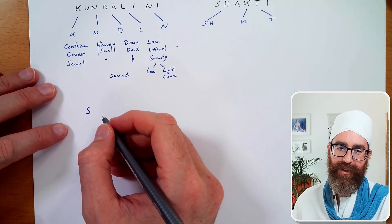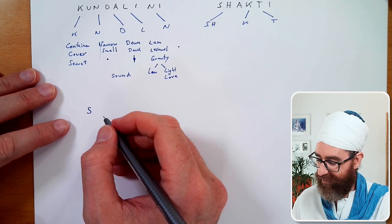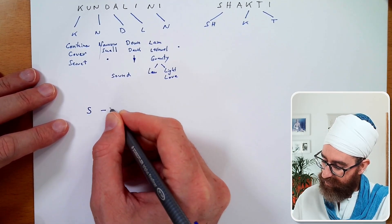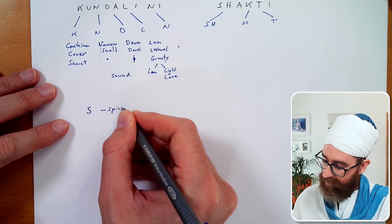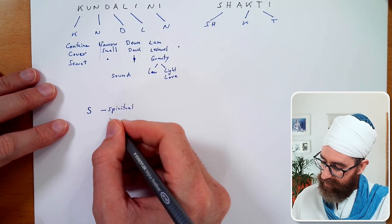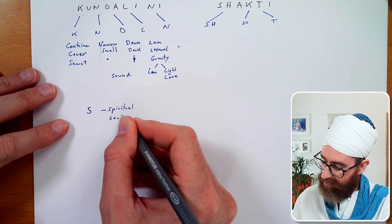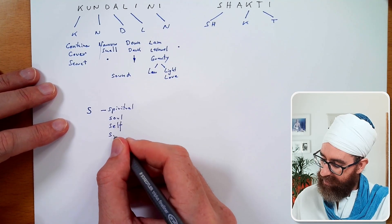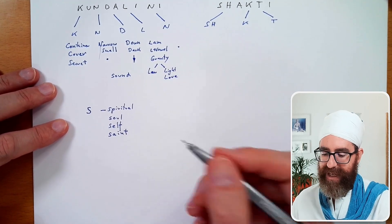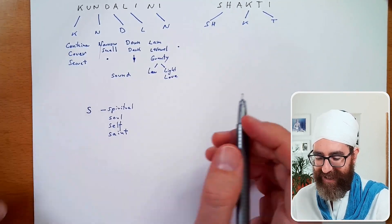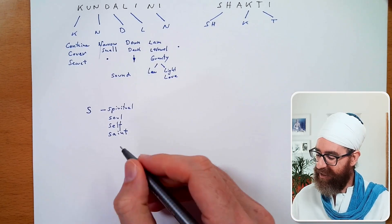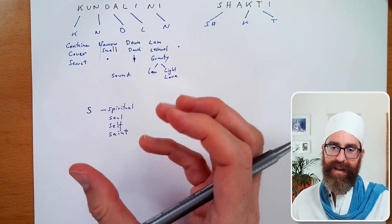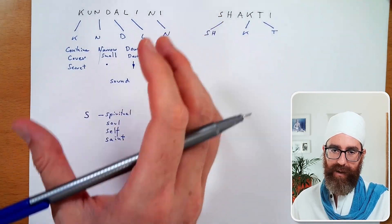There are so many words with the letter S. Some of the things that are interesting are actually very spiritual. Spiritual. There's a spirit, there is soul, the self, the swami, the saint, the sadhu, the sacred, the sage. S is intimately the sound of the snake, of the Kundalini.